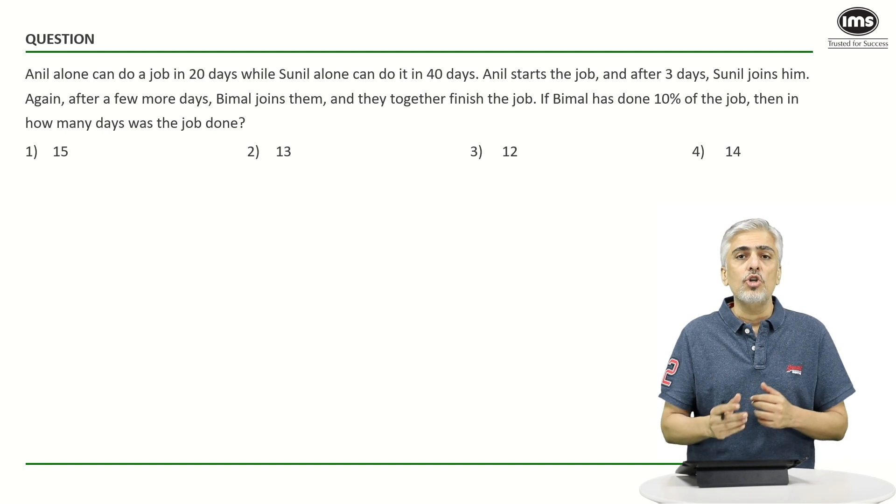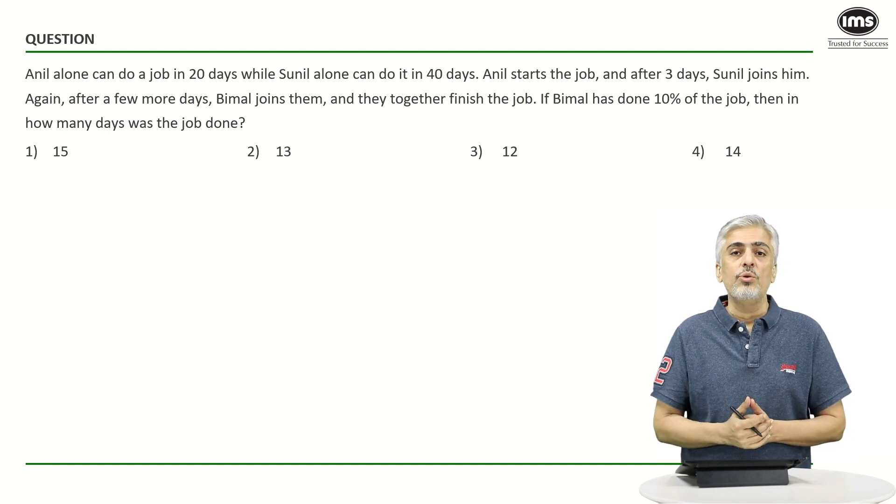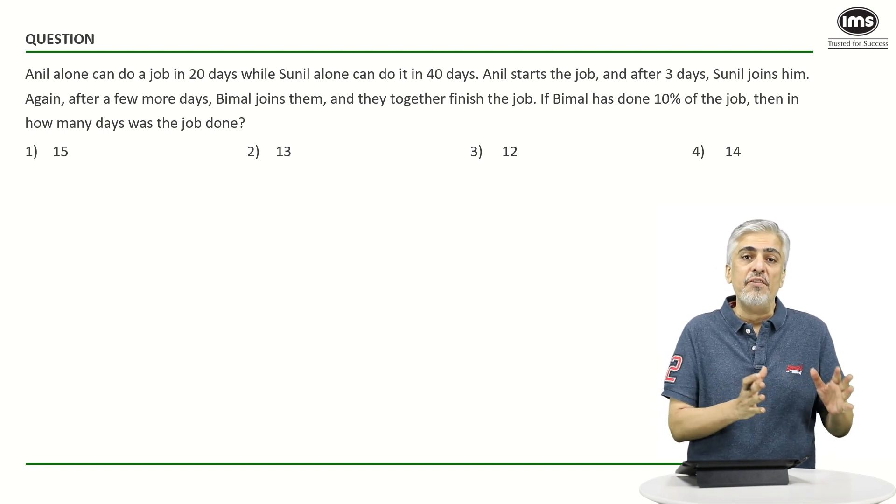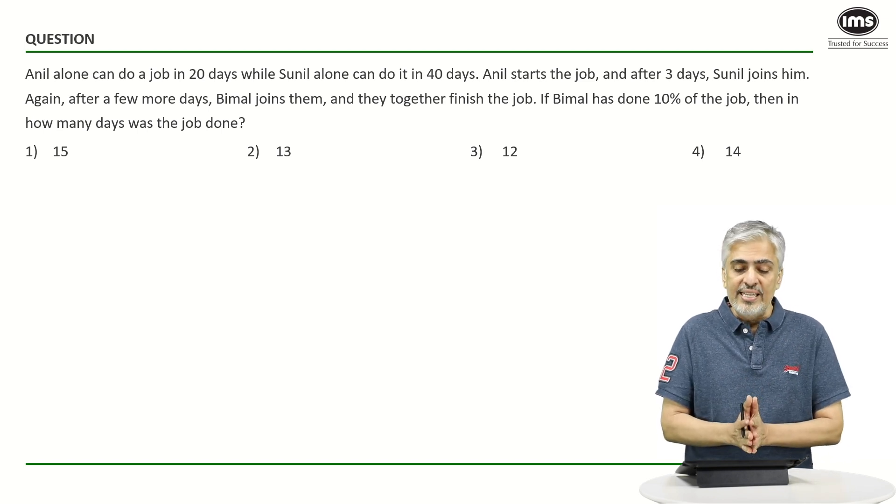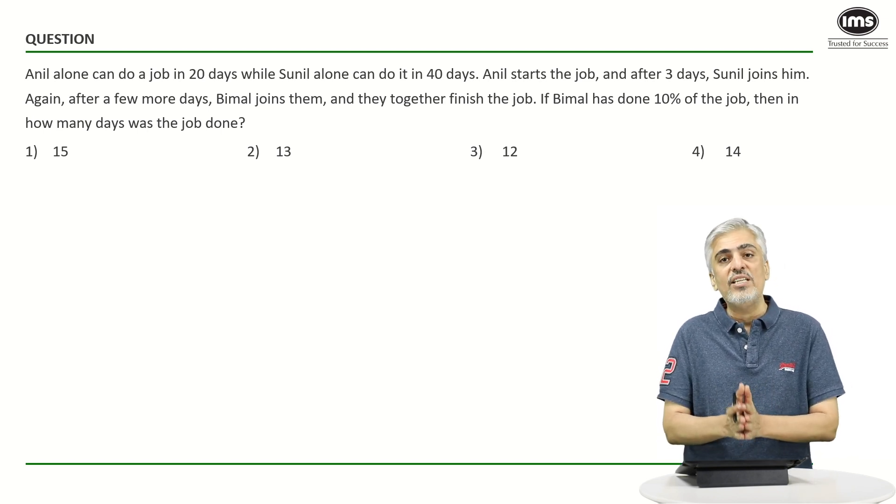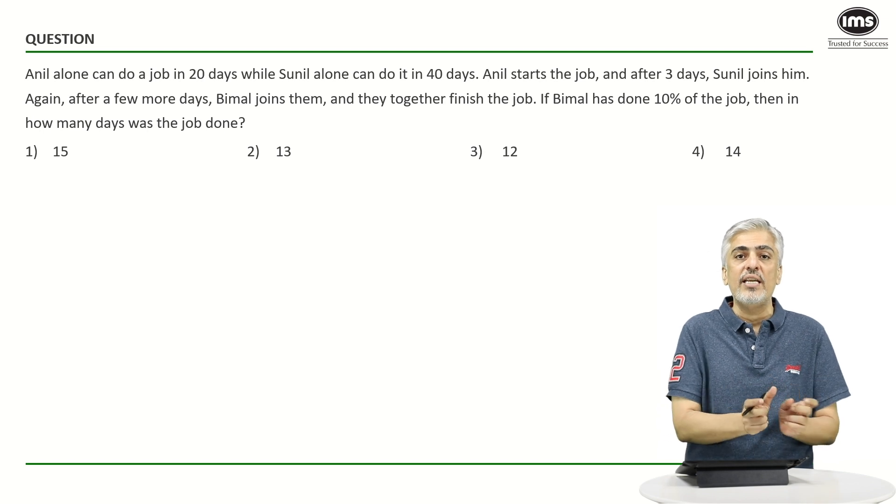Anil alone can do a job in 20 days while Sunil alone can do it in 40 days. So can I say Anil's efficiency is double of Sunil's efficiency right? Anil starts the job and after three days Sunil joins him. So for three days Anil is working alone.